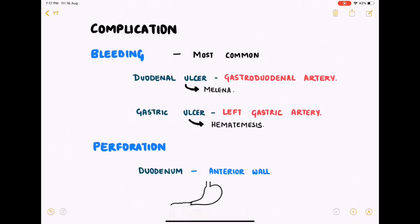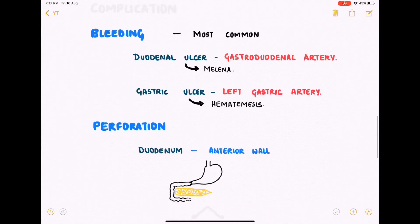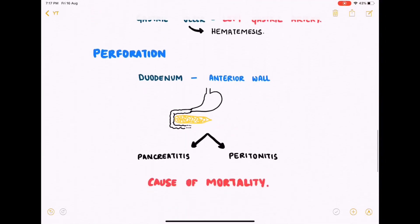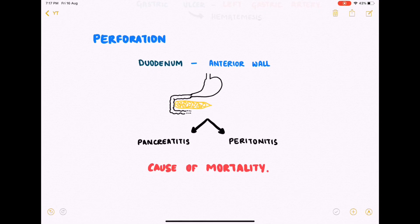The next serious complication of peptic ulcer disease is perforation. Perforation of the duodenum is normally seen on the anterior wall, and this may lead to escape of acid onto the pancreas or into the peritoneum, which leads to pancreatitis and peritonitis respectively.